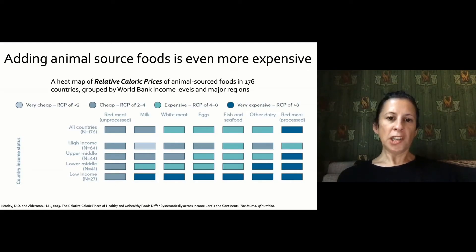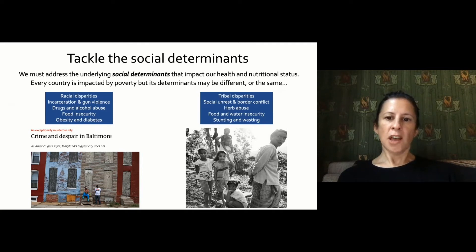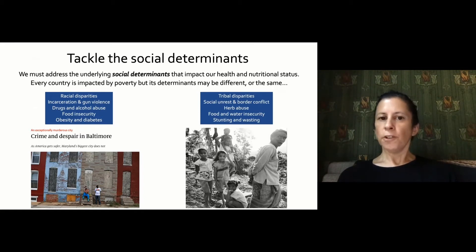There's a real inequity in the economic and physical access to food in the world. But we must keep in mind it's not just physical and economic access — there are many other underlying social determinants that impact health and nutrition status. Every country is impacted by poverty, but its determinants may be different depending on where you are, who you are, and the type of support you can get.